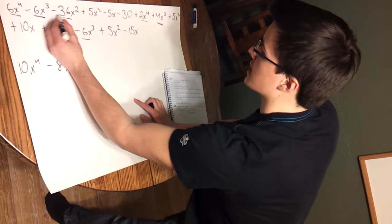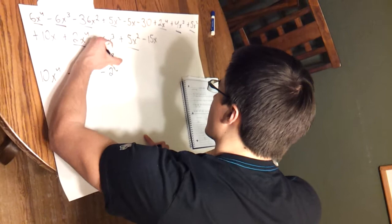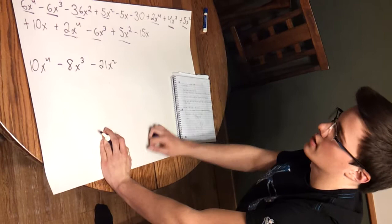Next we'll combine all terms with an x squared in it. We have negative 36x squared, 5x squared, another 5x squared, and another 5x squared. After you combine all those terms together you'll get a negative 21x squared.